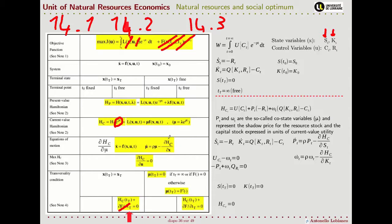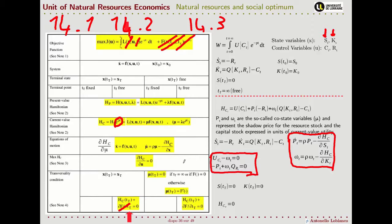Importantly, both p and omega have a time index — these co-state variables are not constant across time. Their evolution across time is given by two equations. When we translate these into the notation of our model we obtain two equations. Also, when we take the first derivative of the Hamiltonian with respect to the two control variables — consumption and natural resource extractions — we obtain two more equations that are the first-order conditions for maximization of the Hamiltonian. Keep these four equations, as they are the key results.